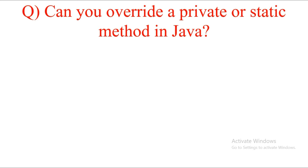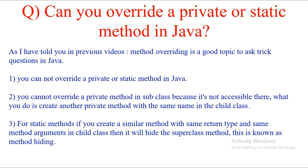The next question is: can you override a private or static method in Java? This is a very twisted interview question. You cannot override a private or static method. For private methods: a private method is specific to its class and cannot be extended to other classes. In a subclass, you will not be able to see the private method. Creating another private method with the same name in the child class just creates a new method — it does not override the parent's method. The concept of overriding does not apply to private methods since they are not even visible in the child class.